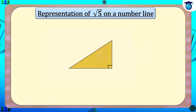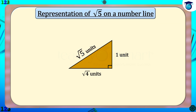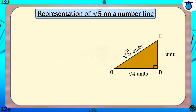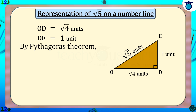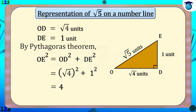Next, let us represent root 5 on the number line. For that, take root 4 units as the base and 1 unit as the altitude of a right triangle so that the hypotenuse equals root 5 units. In right triangle ODE, take OD equals root 4 units and DE equals 1 unit. By Pythagoras theorem, OE² = OD² + DE² = (√4)² + 1² = 4 + 1 = 5, therefore OE equals root 5 units.